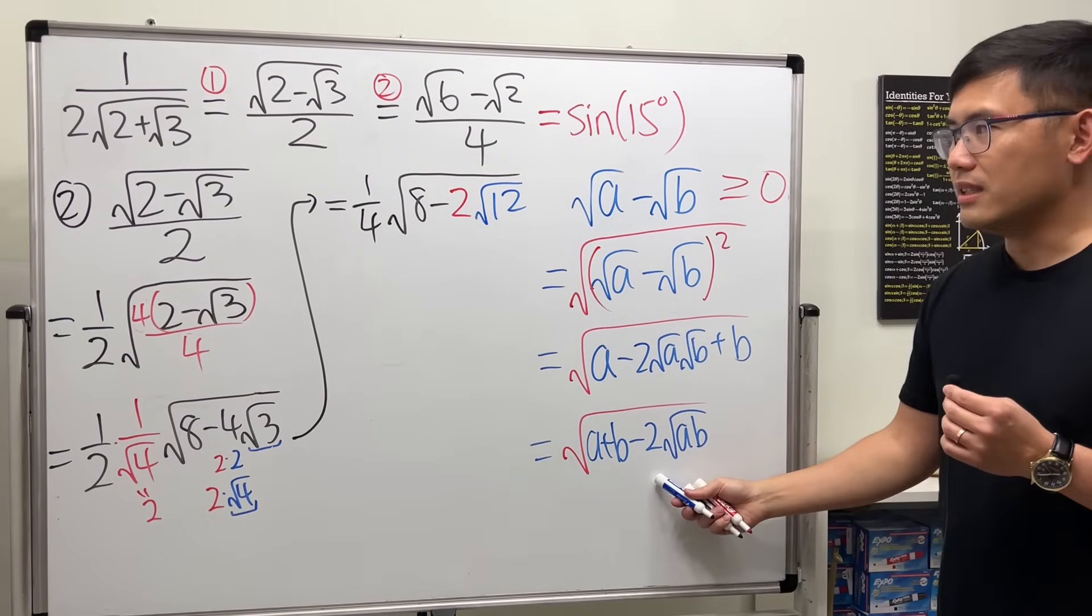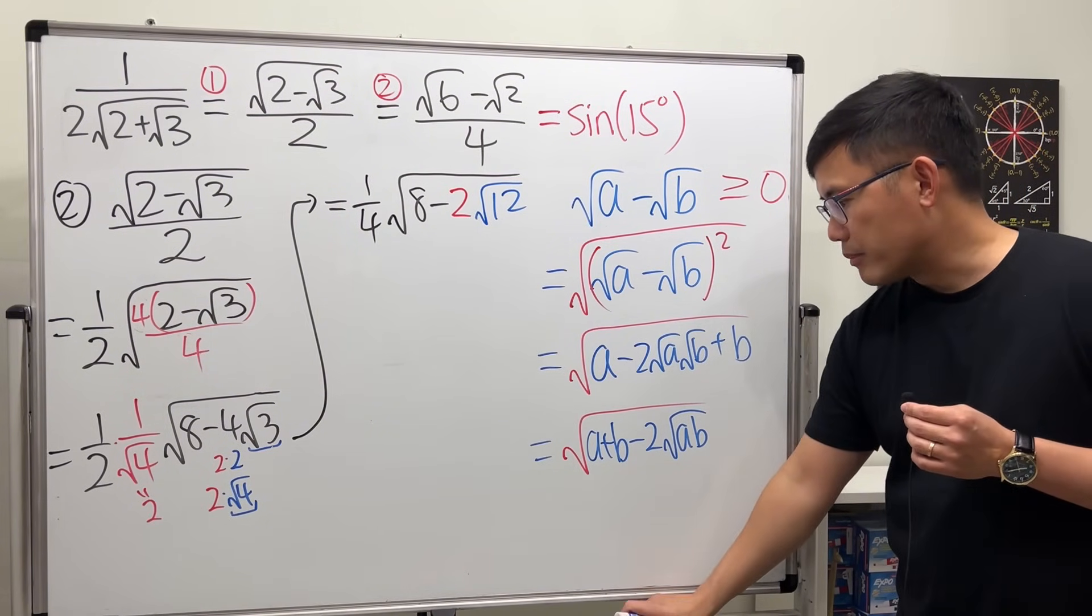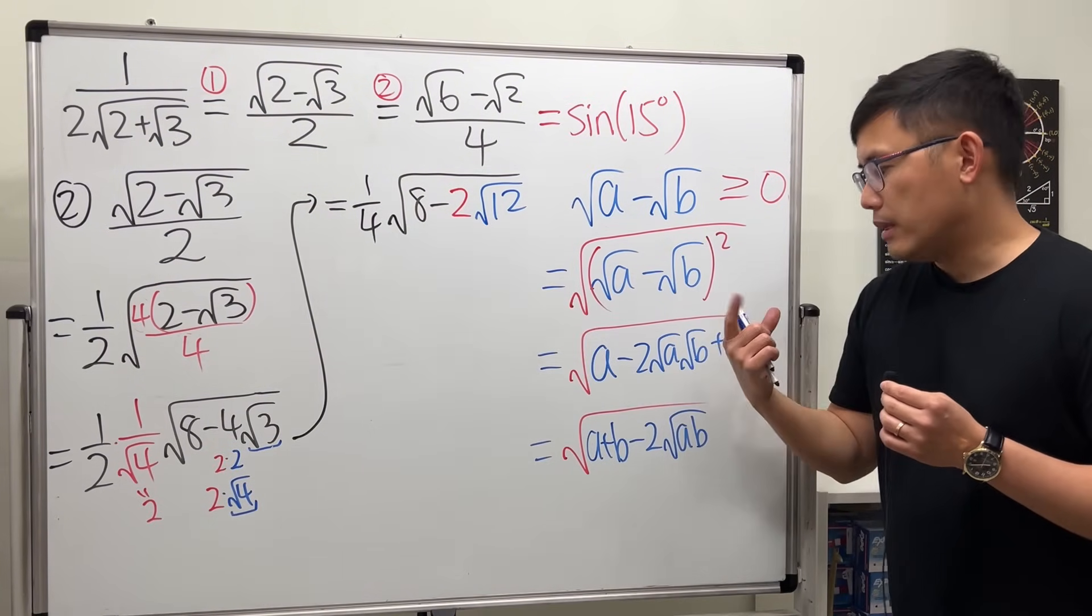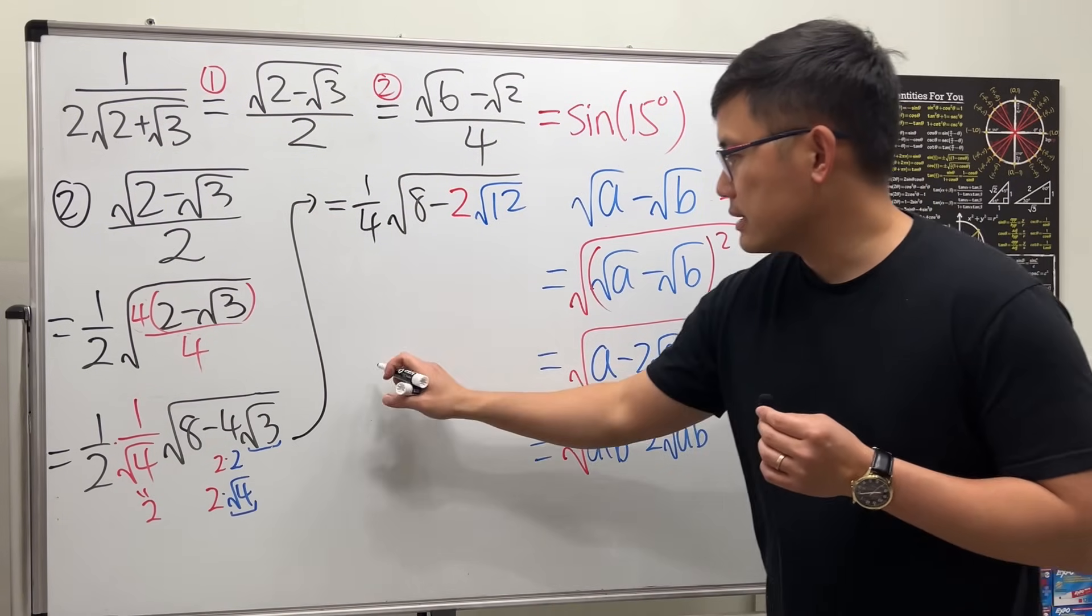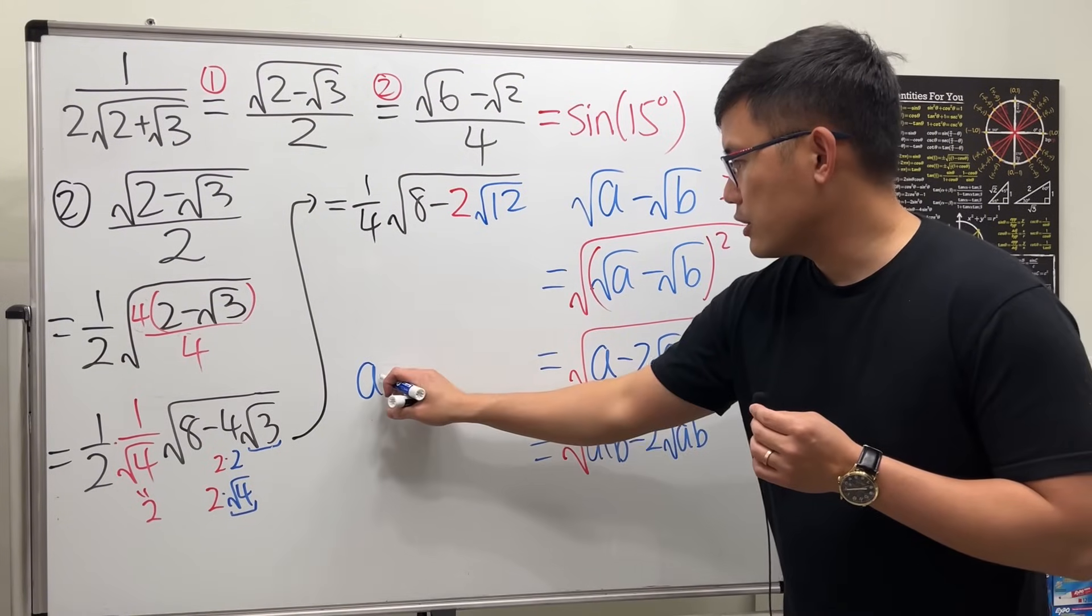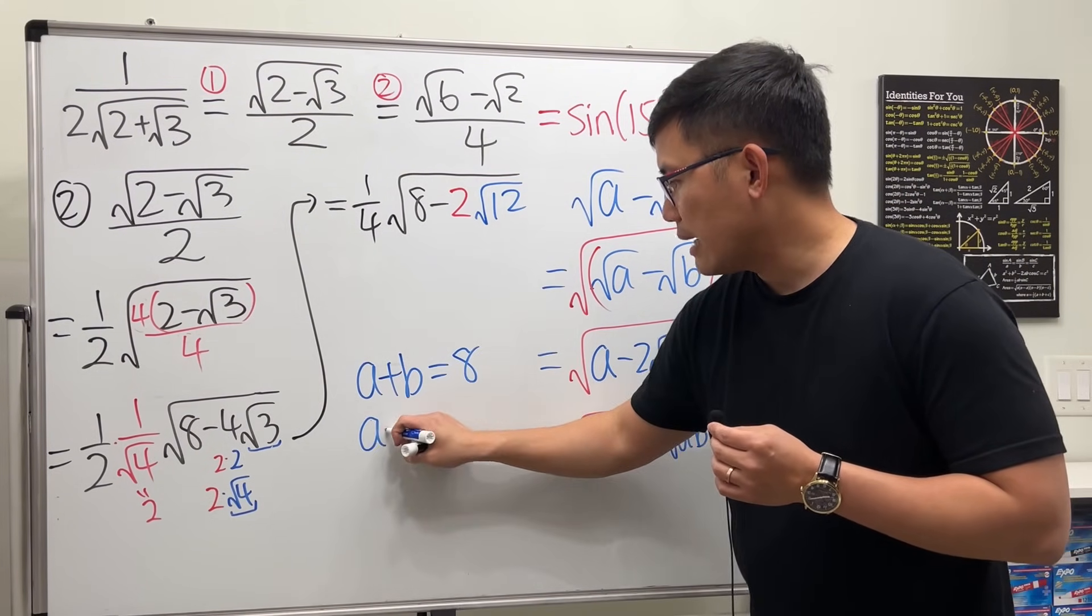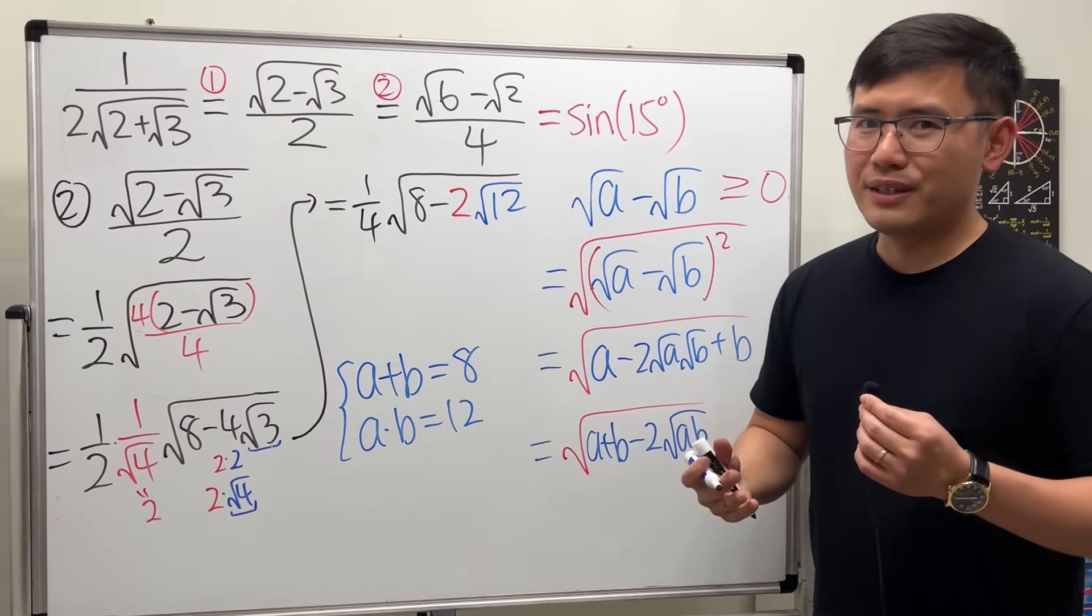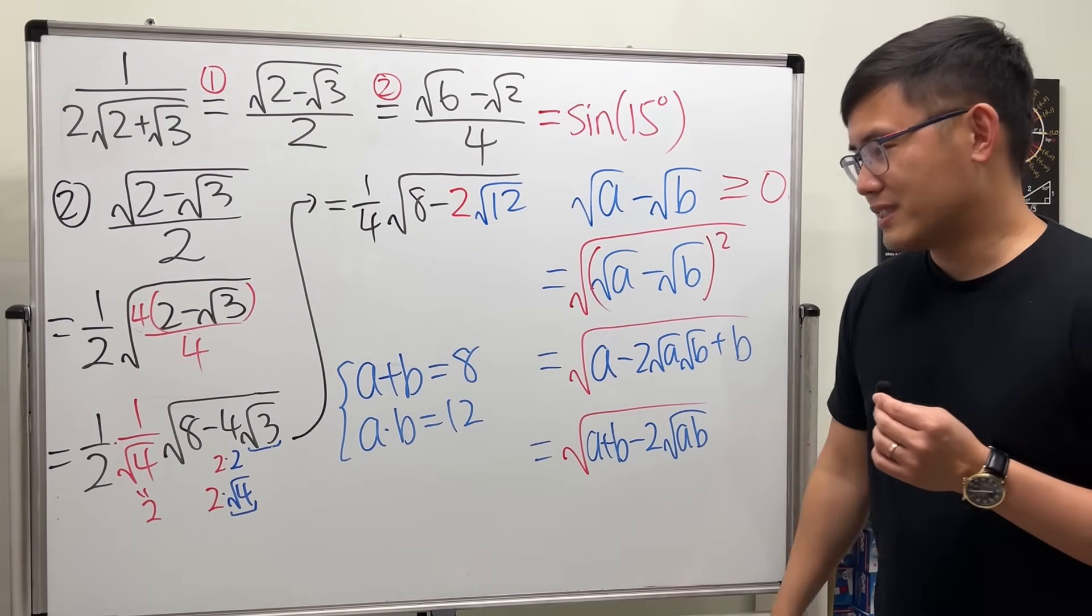Now, this is exactly in this form. So, now, we will have to think about two numbers so that they add up to eight. And then, when they multiply, we will get twelve. So, that's the question. Two numbers, a and b, such that a plus b equals eight. And then, a times b equals twelve. So, it's kind of like factoring a trinomial, right? And if you think about it, six and two works.